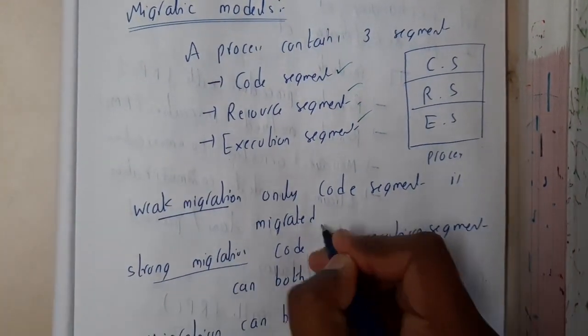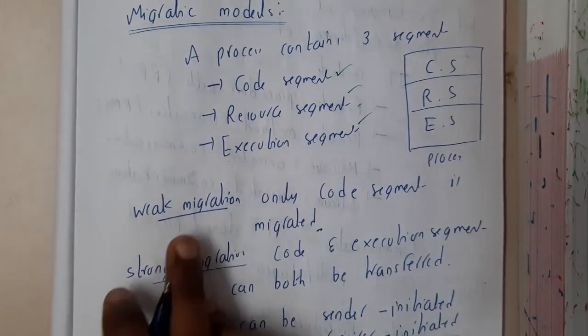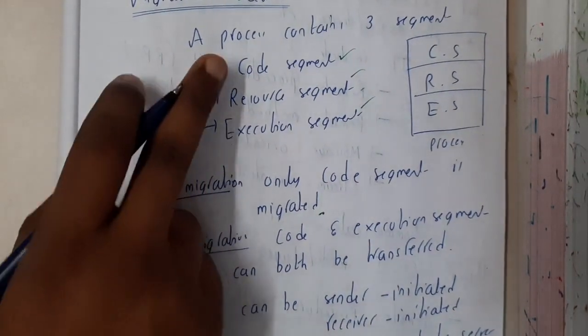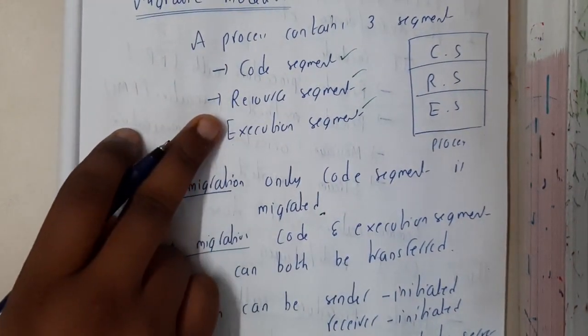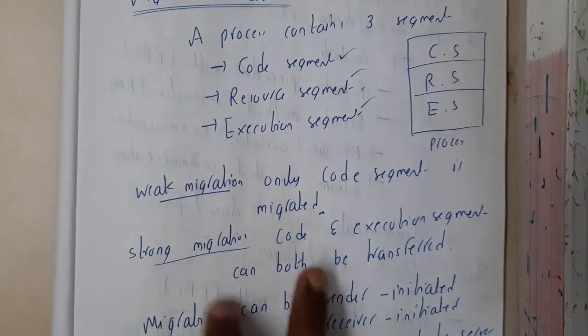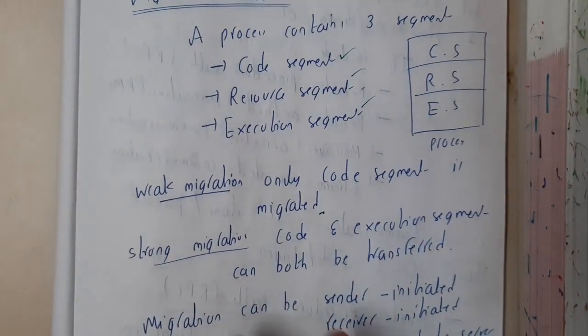Similarly, strong migration: along with the code, execution segments are transferred. Then we can say that is strong migration. Migration can be initiated by both sender and receiver.